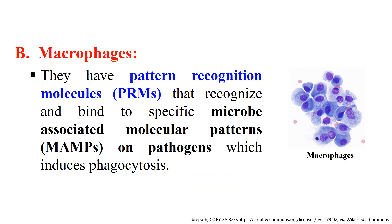The second professional antigen presenting cell is macrophages. Macrophages are dispersed throughout the body. They have pattern recognition molecules that recognize and bind to specific microbe-associated molecular patterns on pathogens, which ultimately induces phagocytosis. Macrophages can be stimulated by T cell secretion of interferon gamma. After activation, macrophages are able to express class 2 MHC molecules and co-stimulatory molecule B7, and can present the phagocytosed antigen to helper T cells. In this way, macrophages also act as professional antigen presenting cells.